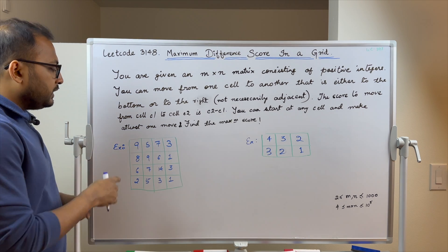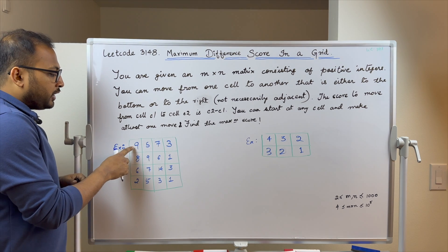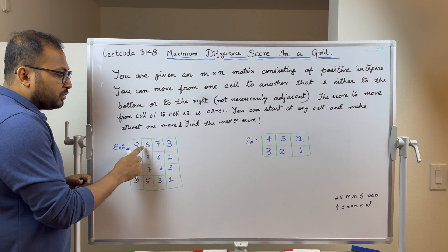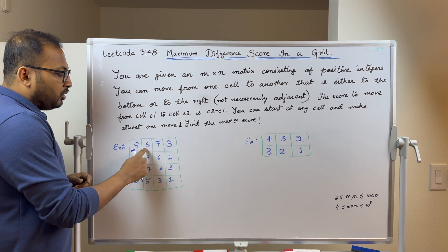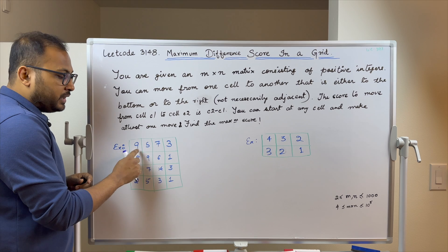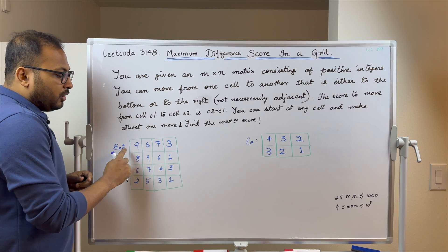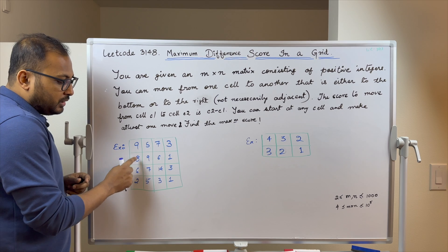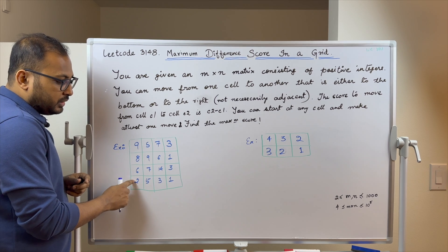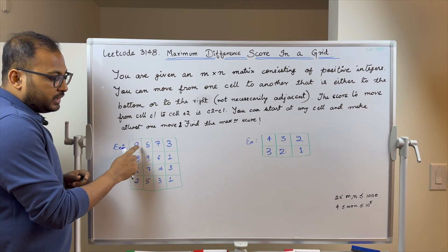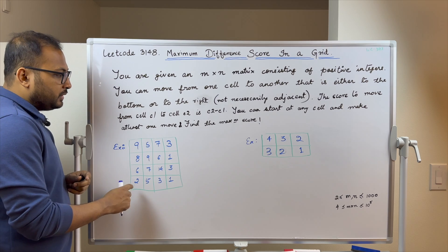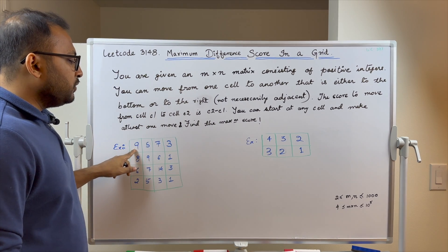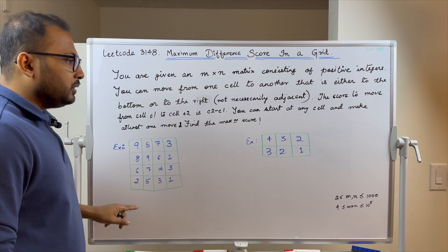That means from a current cell you can move to any cell to the right — not just the adjacent one, but any of those cells. Similarly, you can move to any cell to the bottom of the current cell. So for a particular cell, you can move to any cell to the right or any cell to the bottom.